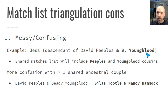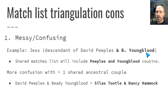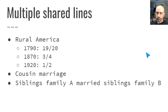On the other hand, there are some downsides. With David Peoples, we won't just be getting connections relating to David's family, but also his wife's family. Jess and I both descend from David and his wife BD Youngblood. When we go through our match lists, we're going to find matches connected to both of those lines. Even more complicating: Jess and I descend not only from David and BD, but also another unrelated couple, Silas and Nancy. So we do see shared matches relating to this other couple, and things can get fairly messy.